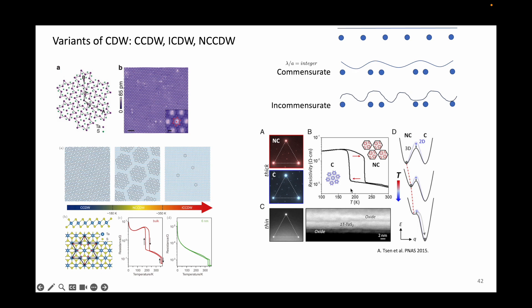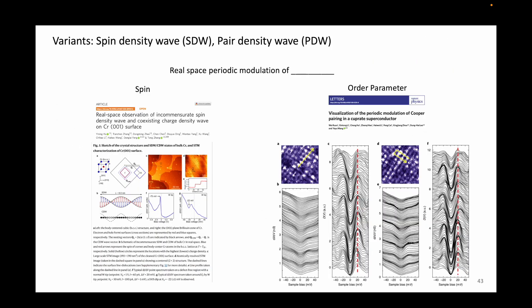Other forms of density waves include spin density waves and pair density waves. Similar to the charge density wave, these are a special modulation of either spin or the order parameter.